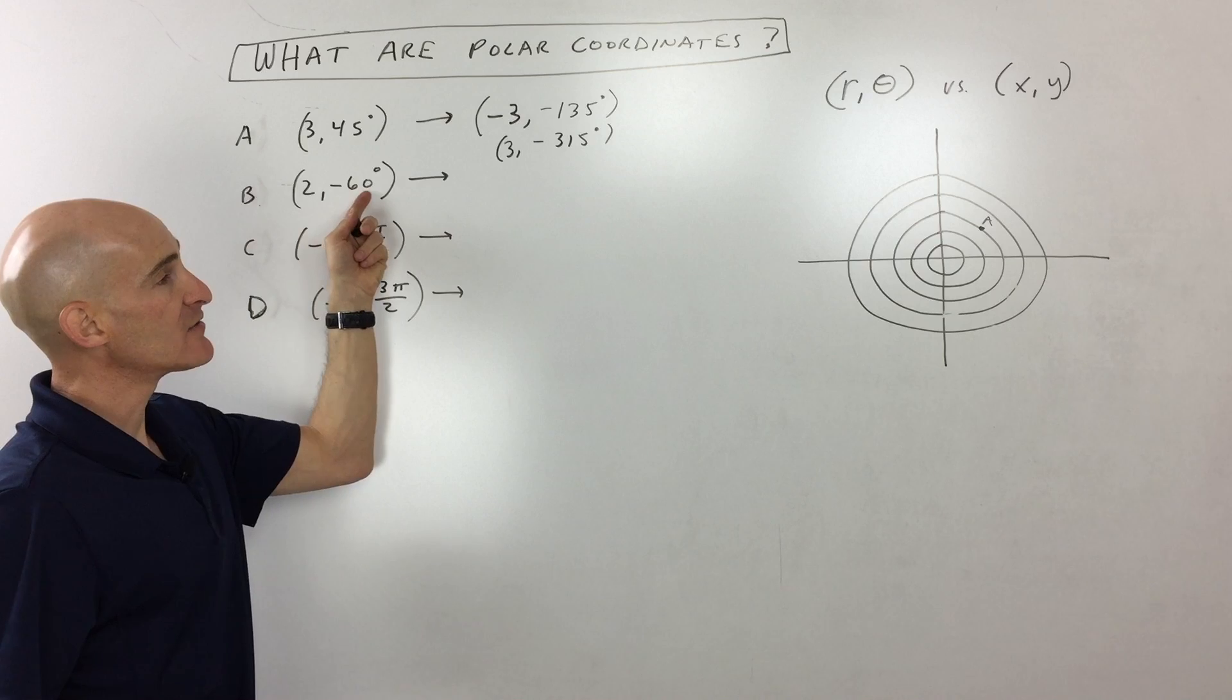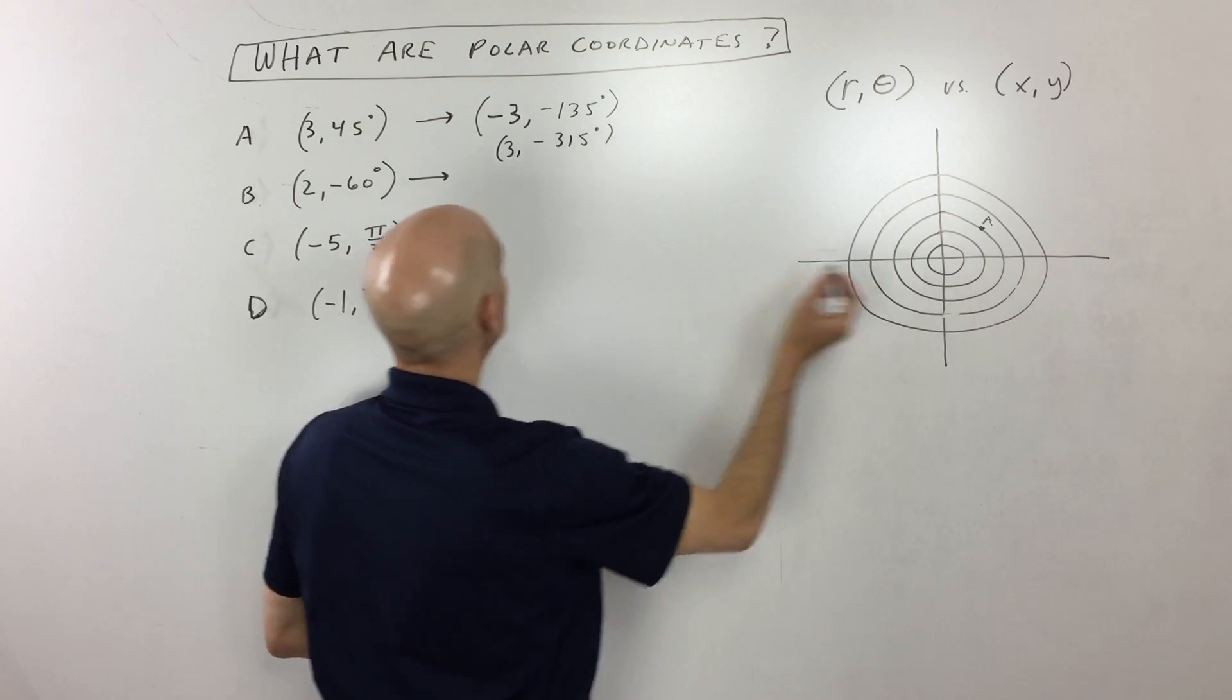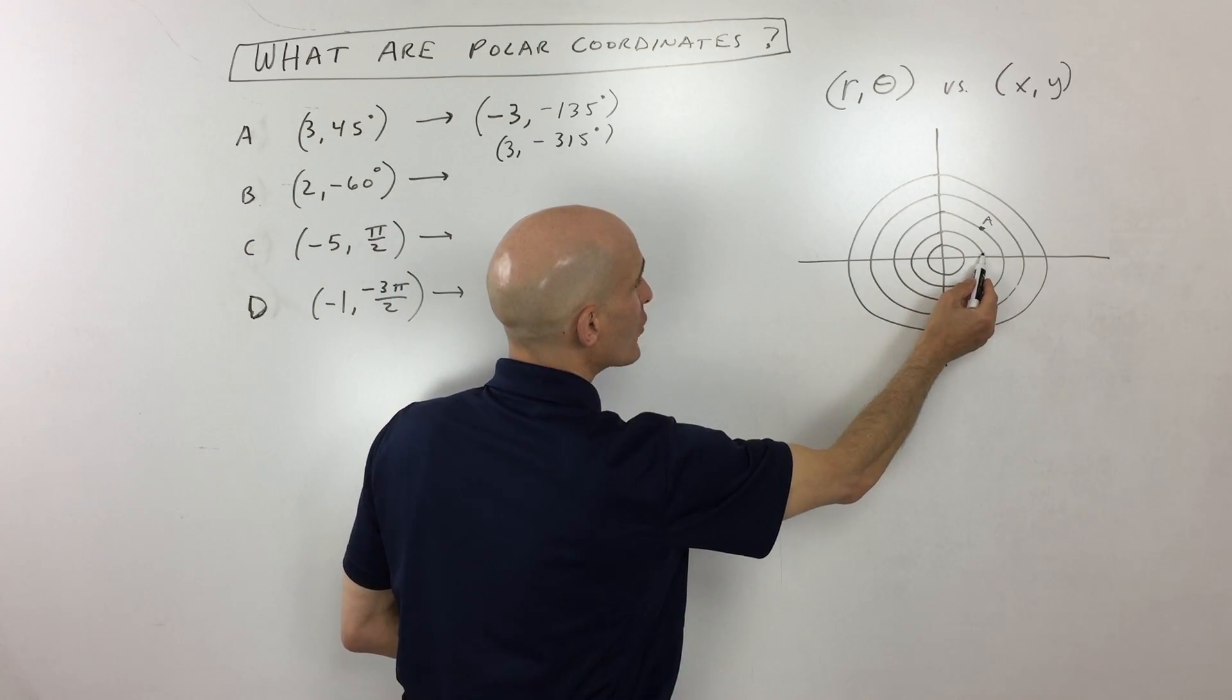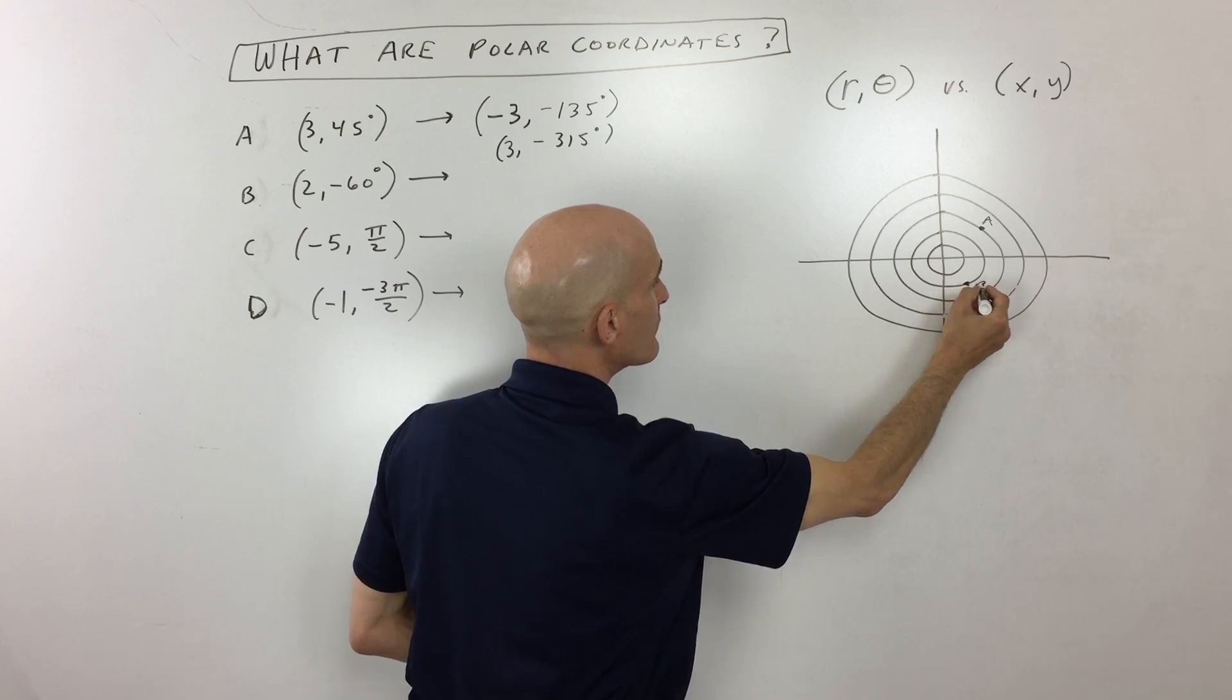Let's go to the second example, point B, (2, -60°). All right, so that means we're on a circle of radius 2, negative 60. So negative 60 means what? It means we're going clockwise 60 degrees. That's going to put you right there. That's point B.